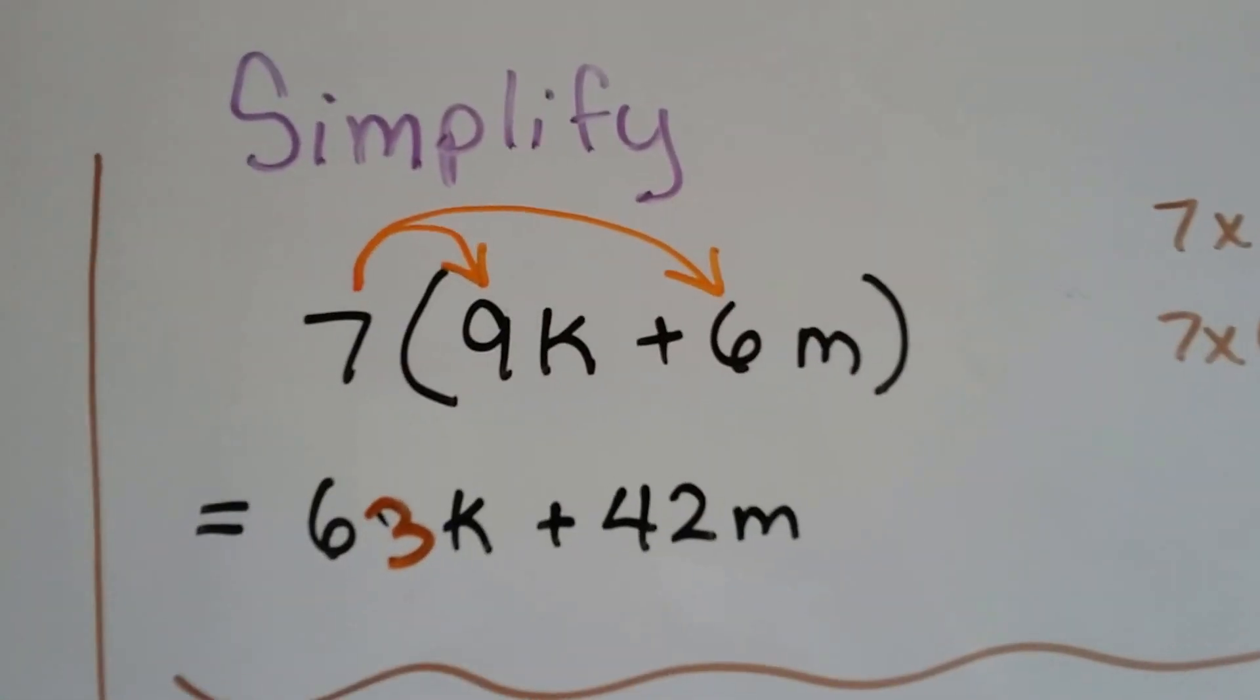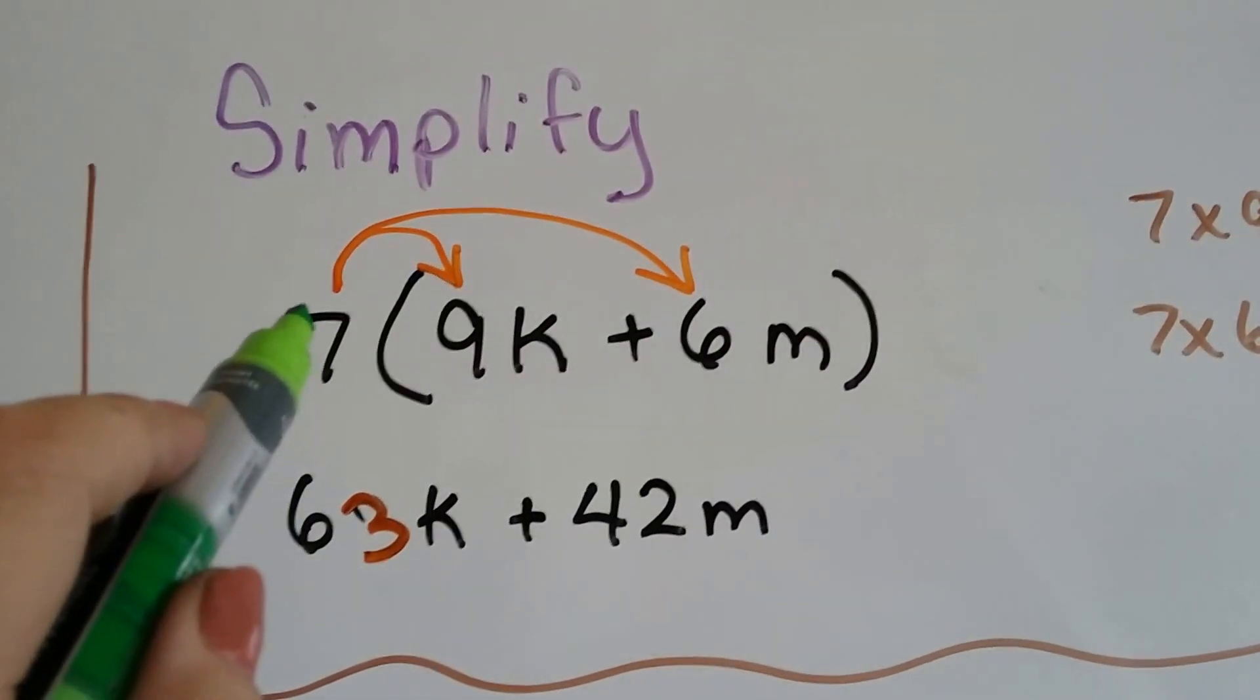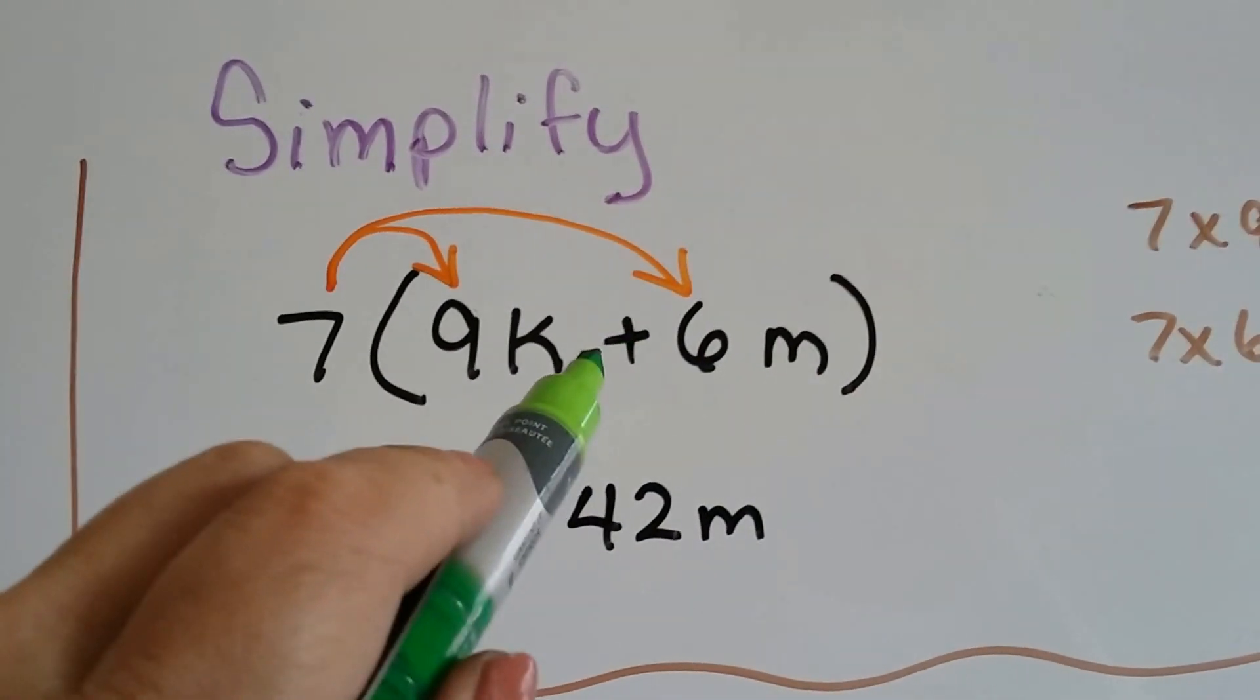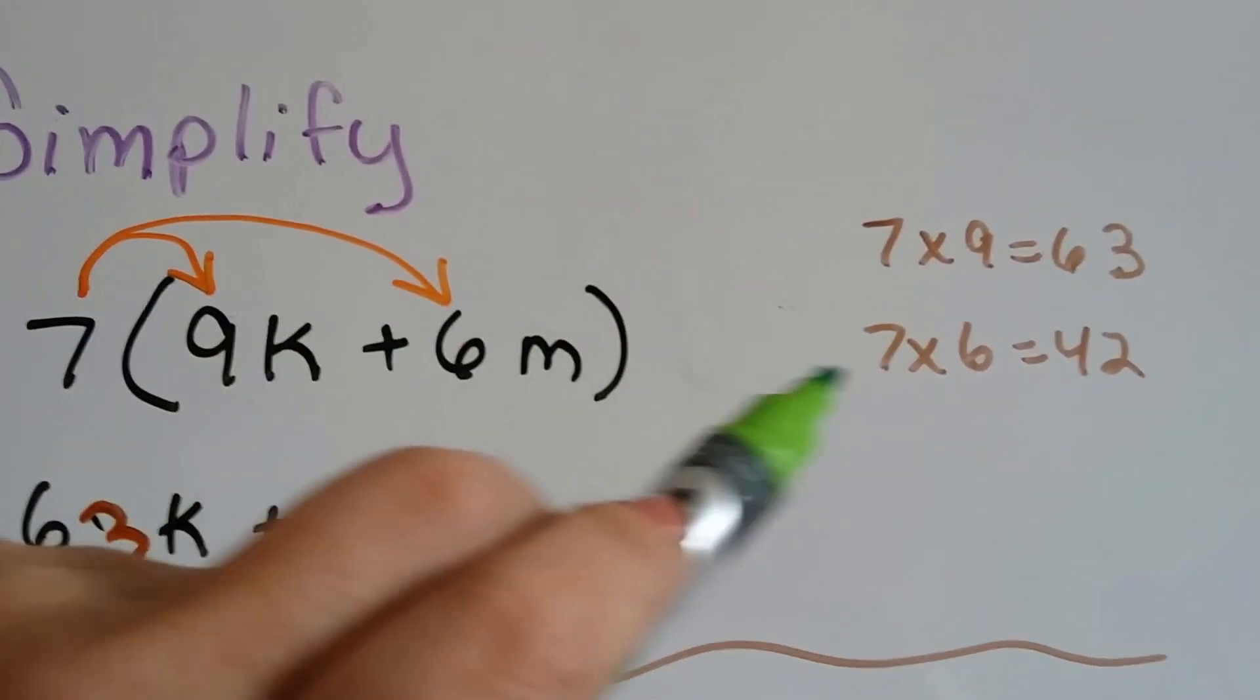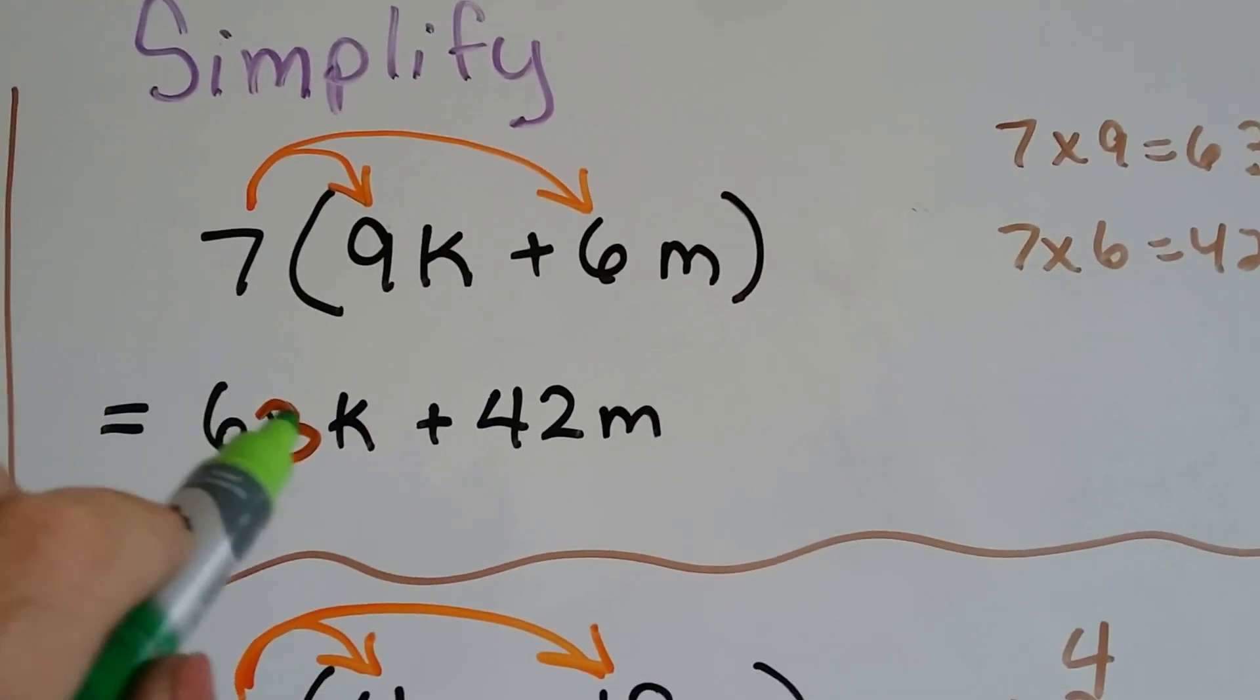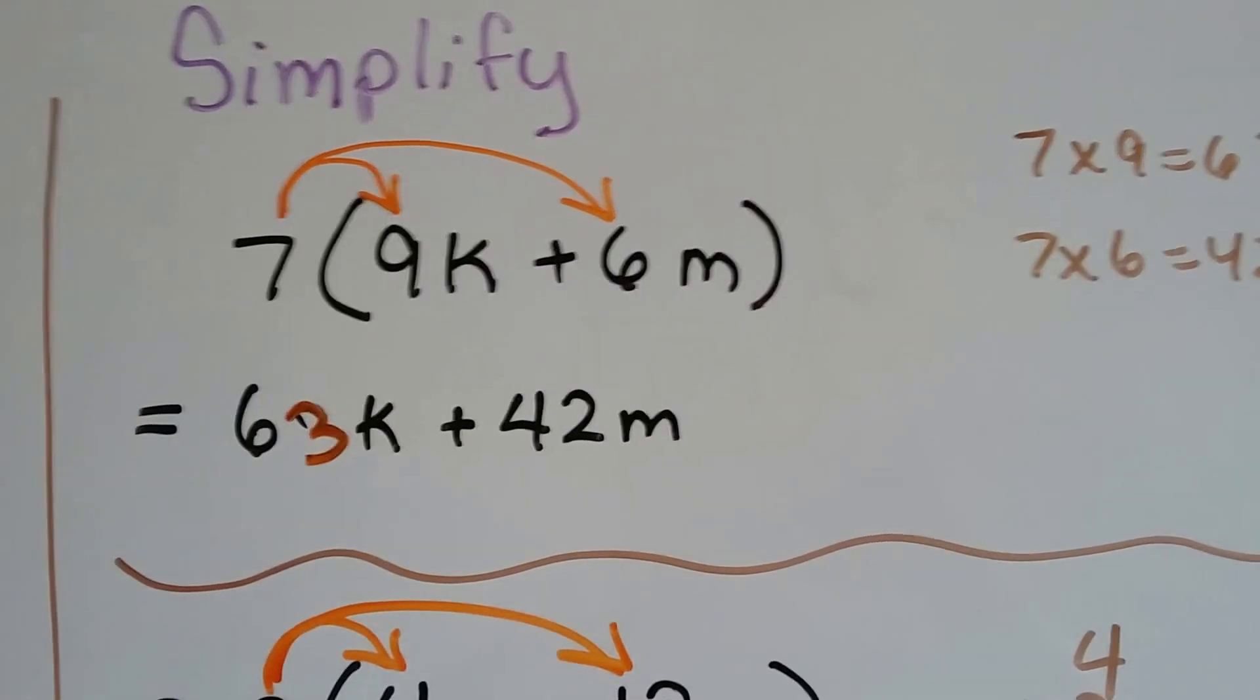If we see something like this and it says 7 times 9K and then 7 times 6M and we add them together. Well, 7 times 9 is 63 and we're going to add that to 7 times 6 which is 42. And we're going to make sure we've got the variables in. So we've got 63K plus 42M and that's as simplified as it can go.